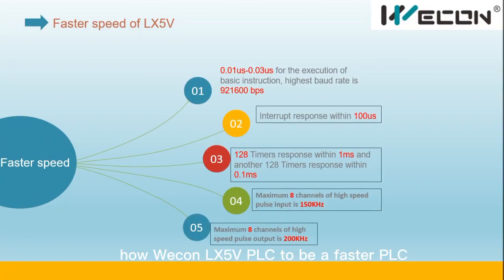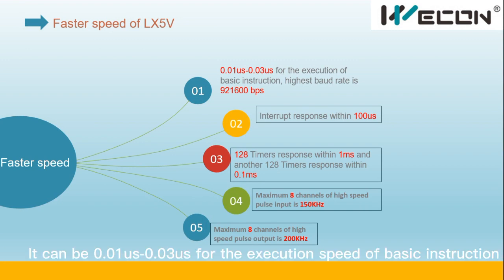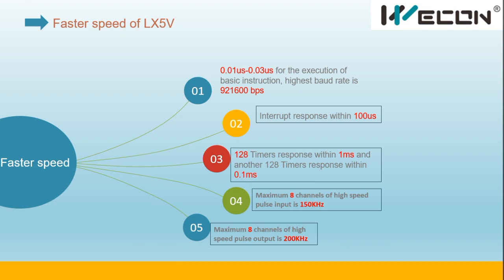How do we consider the LX5e PLC a faster PLC? Number one: it achieves 0.01 to 0.03 microseconds execution speed for basic instructions, and the highest flow rate can be 921K. Number two: interrupt response is within 100 microseconds.